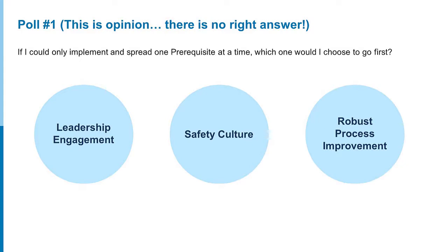That's a lot of information. So we did a quick poll: if you could only implement one prerequisite at a time, which would you choose to go first? Looks like leadership engagement is running ahead. It looks like leadership engagement is the thing. I think that's probably the experience, wouldn't you say, Pam? Yeah, absolutely. We knew we had to start at the top to make sure that we were conveying the shared message. I completely agree.